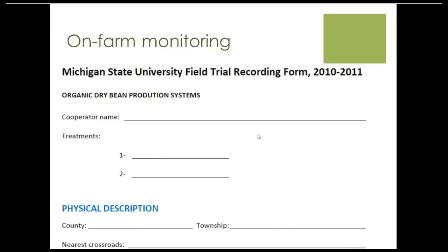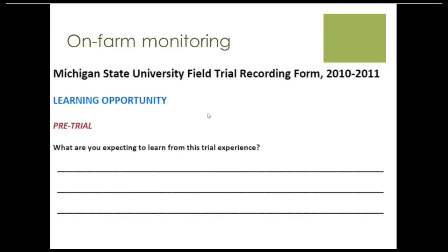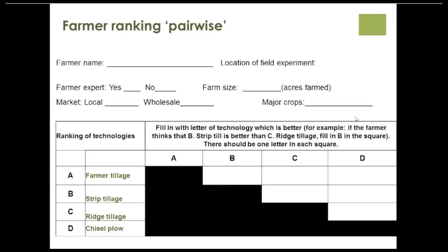What sort of on-farm monitoring do we need? At Michigan State University there's an organic dry bean production system project. They have the farmer describe the treatments, record the cooperator name, and get a physical description with georeferenced information. It's also a good practice to first have people describe what they want to learn from the experiment, and then what they actually learn from it — which is sometimes surprising. They might learn something totally different than they expected, like that something didn't work at all due to unexpected flooding.